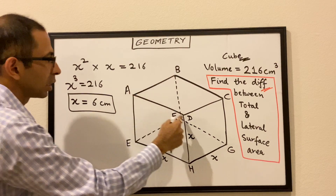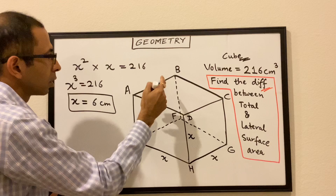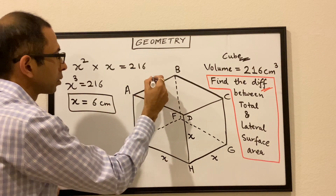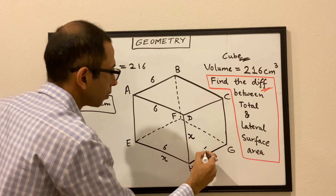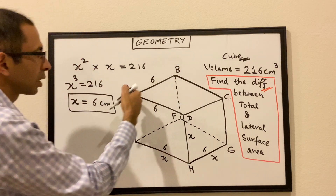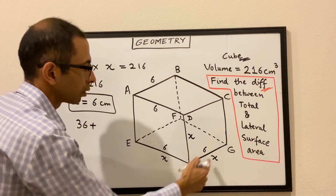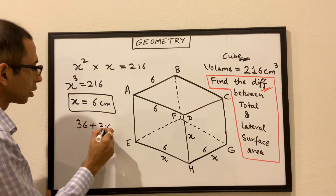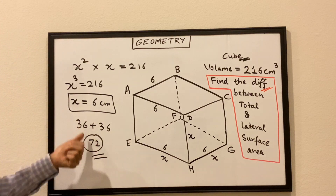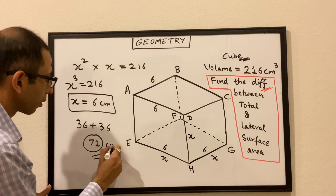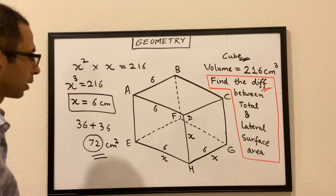The surface area of the top plus the surface area of the bottom gives the difference. Each side is x, which equals 6. So the surface area of the top would be 6 times 6, which is 36, plus the surface area of the bottom, which is again 6 times 6, which is 36. 36 plus 36 is 72. Hence, 72 cm squared is the difference between the total surface area and the lateral surface area.